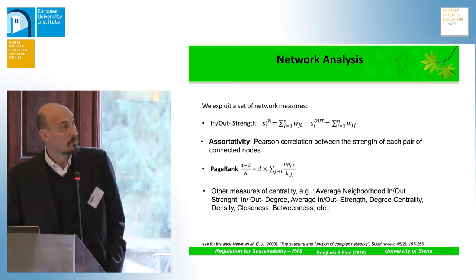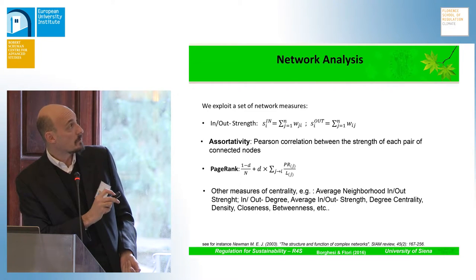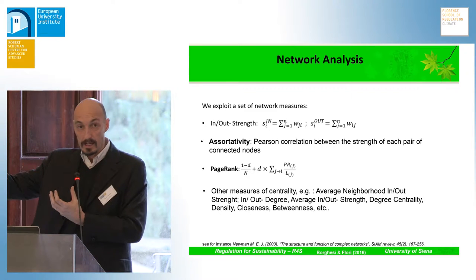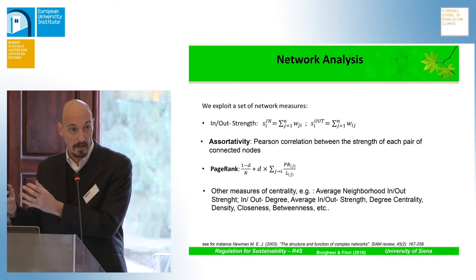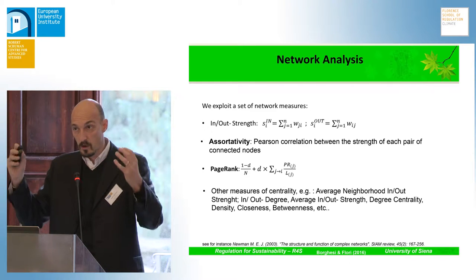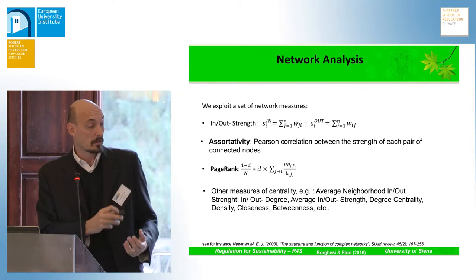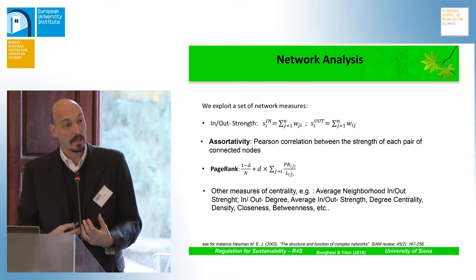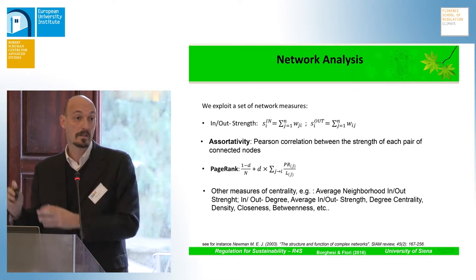We use three measures of network analysis: in-out strength, assortativity, and page rank. The in-out strength measures the number of incoming links and departing links. The assortativity is a Pearson correlation between the strength of two connected nodes. Whereas the page rank, as the name says, ranks the nodes according to their centrality in the system. It accounts for the in-out strength — so the number of links — but also for the centrality of my partners. So a node can be very central not only if it has many links, but also if it has a few links with some very connected partners.